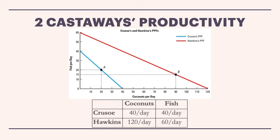The blue line is Robinson Crusoe — that's the one we just looked at — and the new red line is Hawkins. You can see Hawkins, maybe he's younger and more energetic, so he's able to do more. He can produce more fish — up to 60 in a day — and he can gather up to 120 coconuts in a day. So he's much more productive.